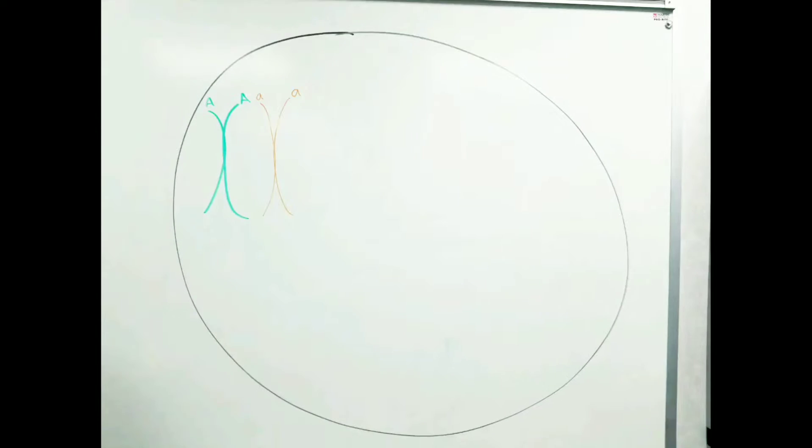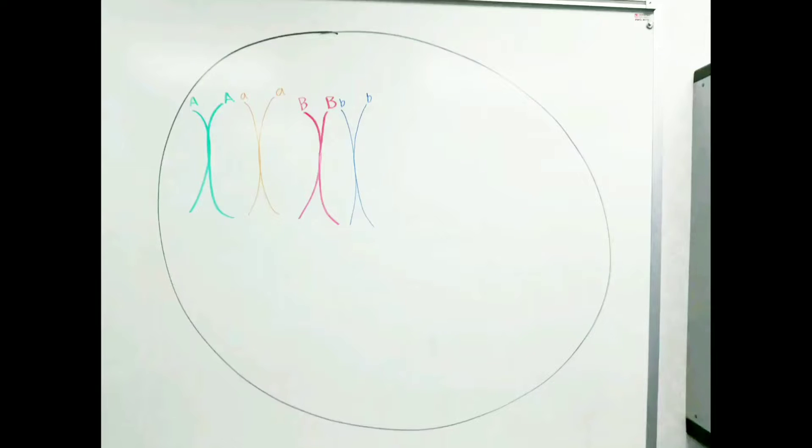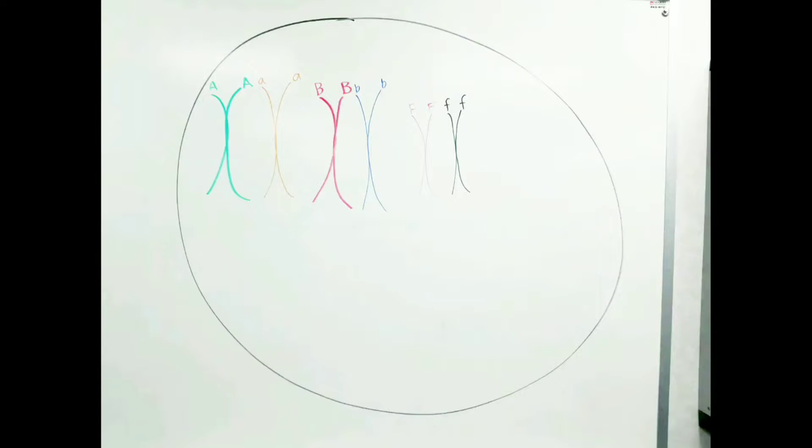Before meiosis begins, the chromosomes duplicate to make their sister chromatids, producing a total of 12 chromosomes in the cell.